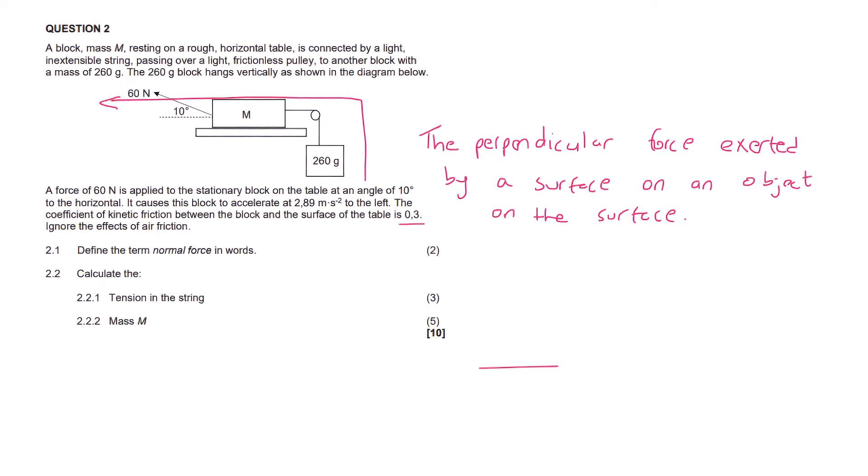Normal force is the perpendicular force exerted by a surface on an object on the surface. So let me explain. If you have a surface and you have an object, then the normal force is always at 90 degrees to the surface. So it's always perpendicular, like that. That's where we get perpendicular from. And it's exerted by the surface on the object, which is on the surface.